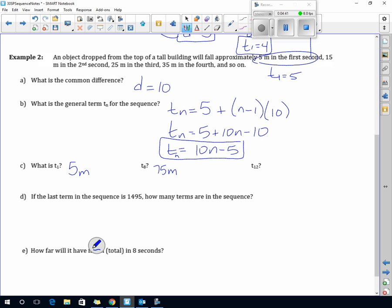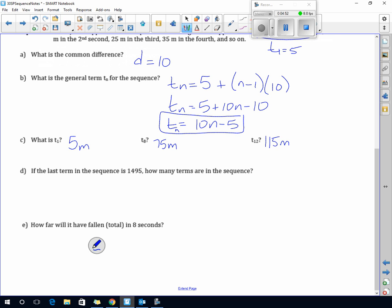The last term in the sequence is 1495, how many terms are there? If I use the simplified version, it's pretty straightforward because I'm trying to find what n is. If I move the 5 over, I get 1500 equals 10n, so n is 150.